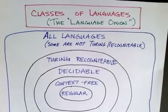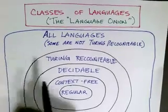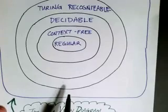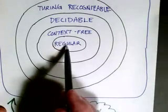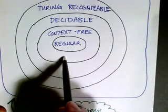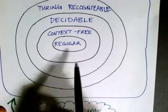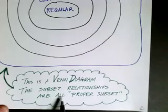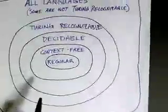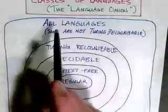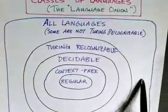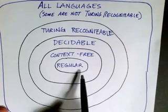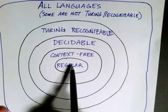Let me talk about the different classes of languages a little bit more. This is a diagram of the so-called language onion — a Venn diagram where each circle represents a whole class of languages. A regular language would be in the inner circle, and a context-free language that's not also regular would be in the next circle. These circles show proper subset relations, and each set is distinct and different from the others. In the innermost circle we see the class of regular languages.